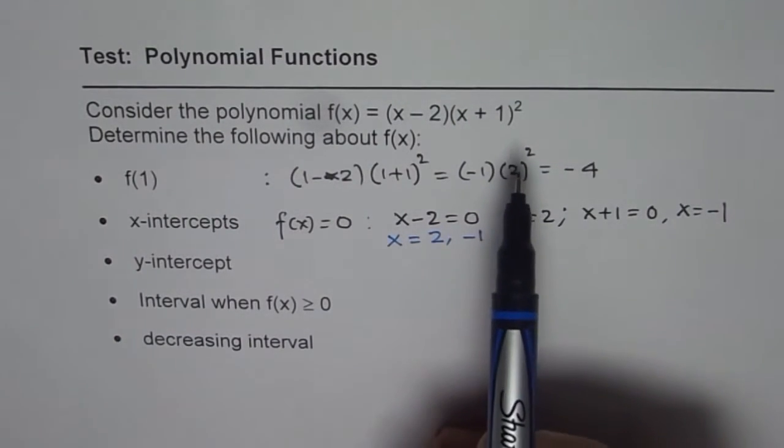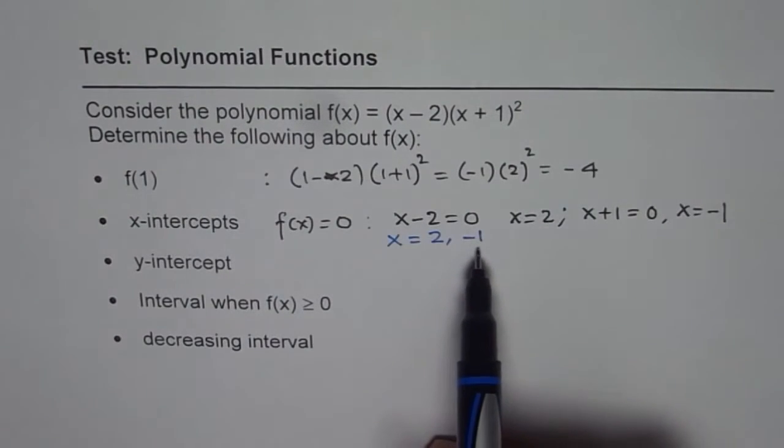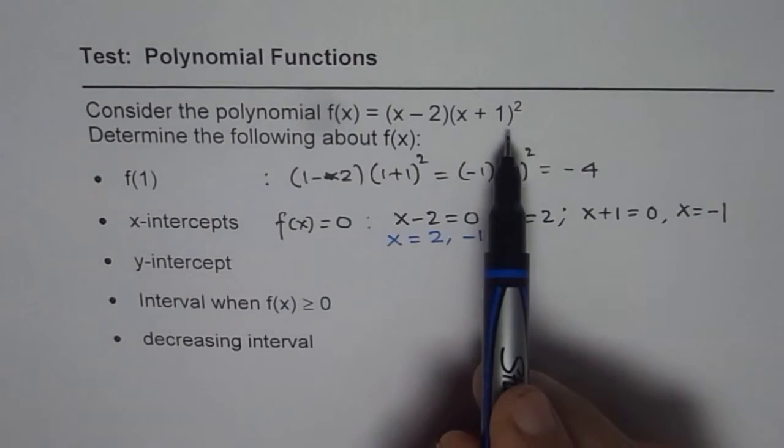We have also learned that this is a linear zero and here the multiplicity is, or the order is, 2.